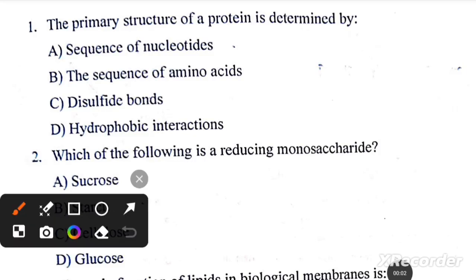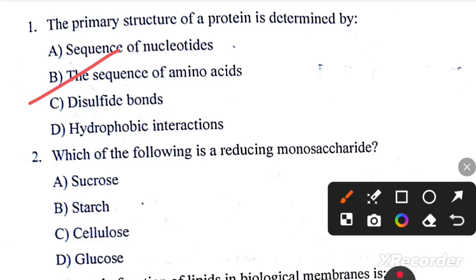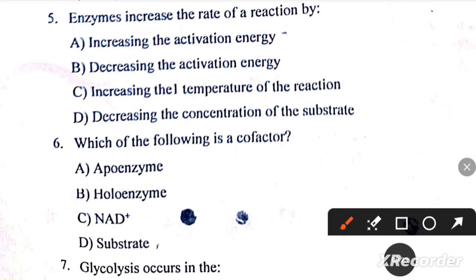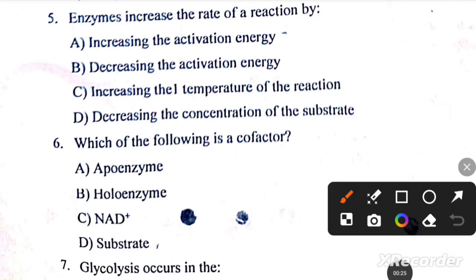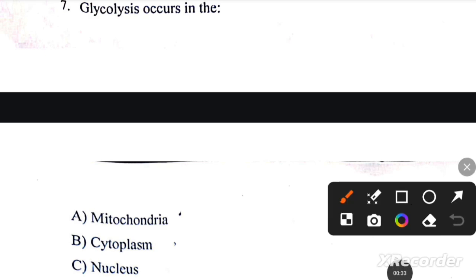The primary structure of a protein is determined by the sequence of amino acids. Which of the following is a reducing monosaccharide? Glucose. The main function of lipids in biological membranes is forming a permeability barrier. The phosphodiester bond in DNA links a sugar and a phosphate group. Enzymes increase the rate of a reaction by decreasing the activation energy. Which of the following is a cofactor? NAD+. Glycolysis occurs in cytoplasm.